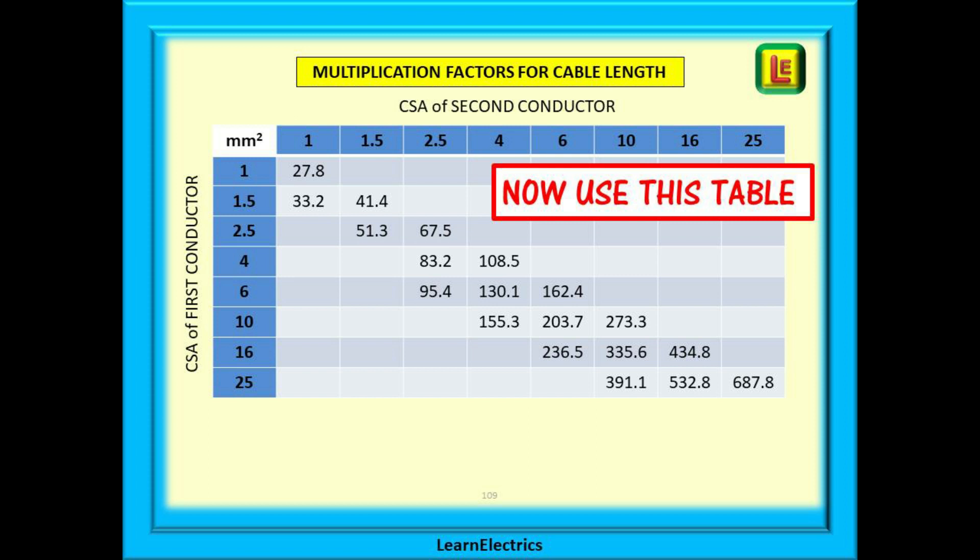Now, use the multiplication factor table that is shown here. We will use it to find a number that is unique to the sizes of conductors being tested.